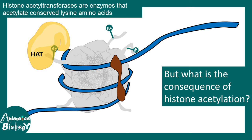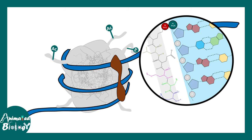Now let's see the real consequences. Histones and DNA interact with each other via electrostatic interaction — the phosphate group of the DNA backbone interacts with the NH3+ group in the lysine, creating an electrostatic attraction. Due to acetylation, the positive charge of the histone is masked, meaning the interaction becomes weaker and the DNA around the histone slightly loosens up.